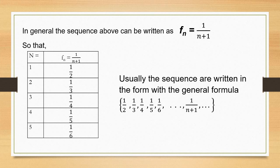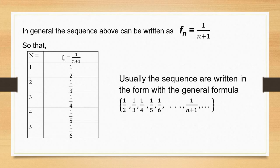Usually, the sequence can also be written with the general formula — showing the first five terms, then three dots, then the general formula, then another three dots, indicating that this is continuous and the sequence is infinite.